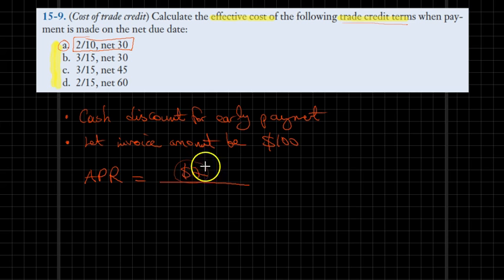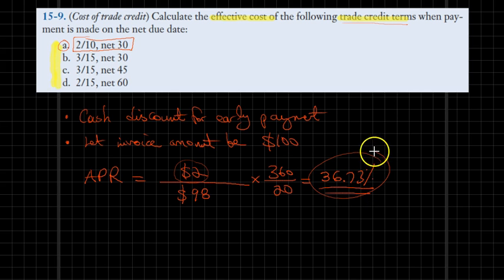As a result, you will be effectively paying a 2% interest and it is as if you are borrowing $98. It is as if you are borrowing the money for 20 days, and making this calculation we realize that the effective cost is quite high, actually at 36.73% cost of borrowing funds. It's quite expensive.